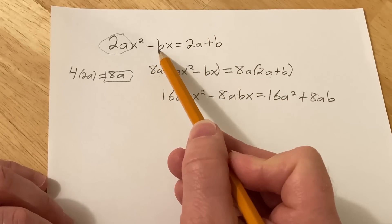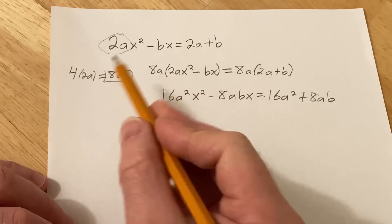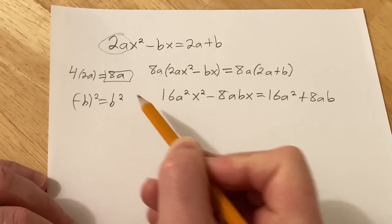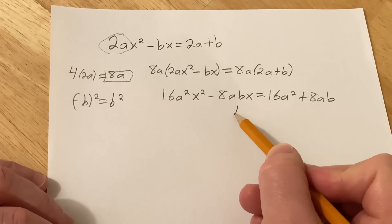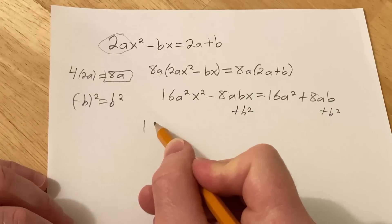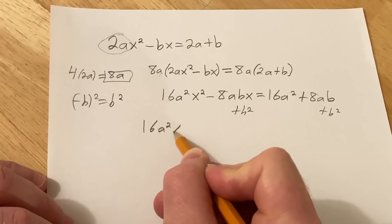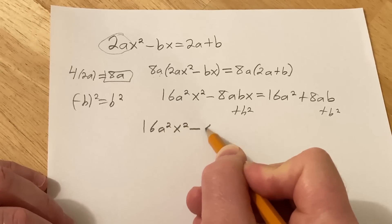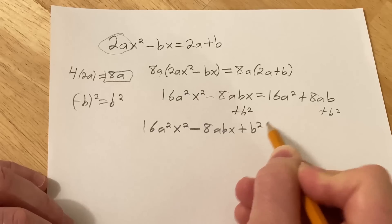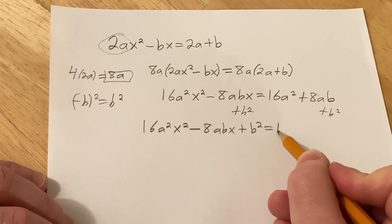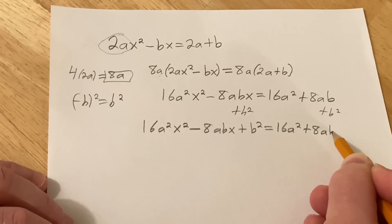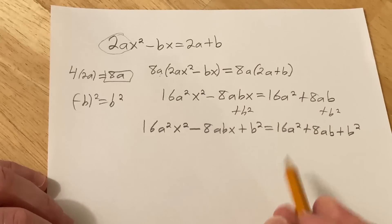Next step is you take this number and square it. So this is a negative b. So we're going to square that. That's going to give us b squared. And now we add that to both sides. So plus b squared plus b squared. So we have 16a squared x squared minus 8abx plus b squared equals 16a squared plus 8ab plus b squared. Very nice.